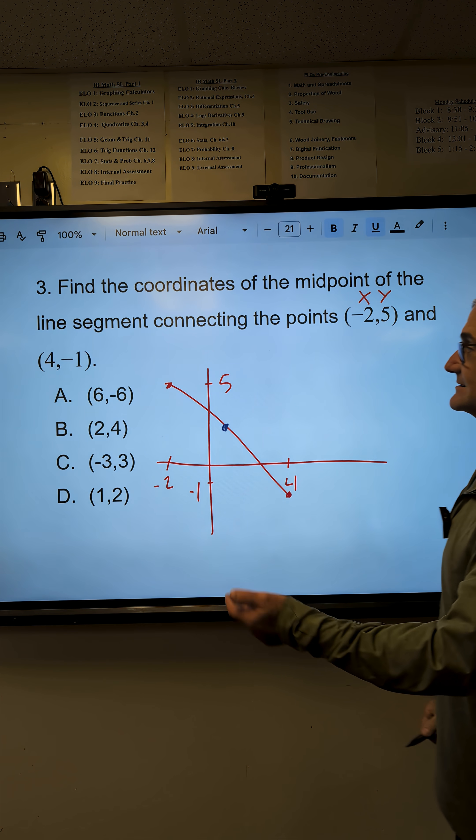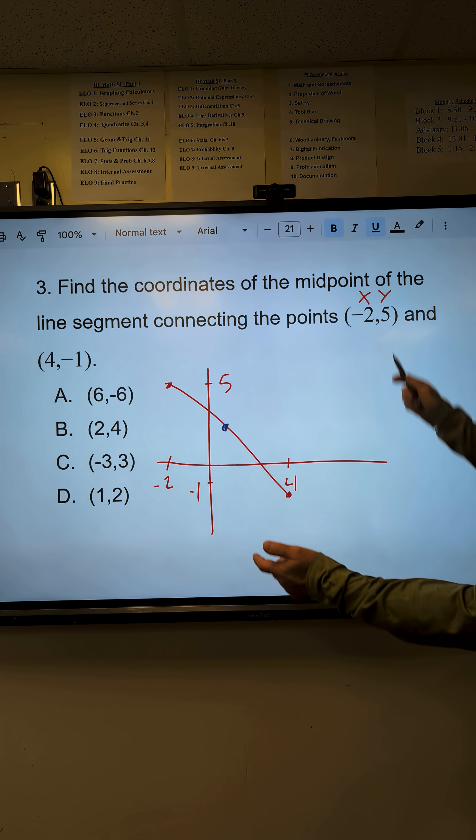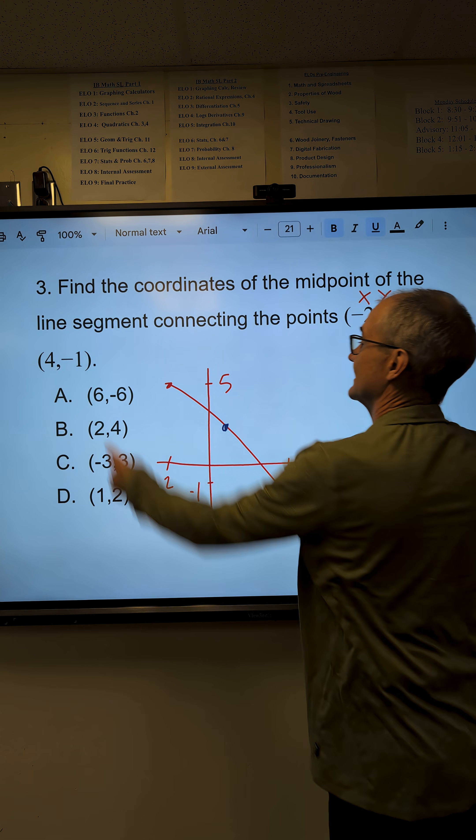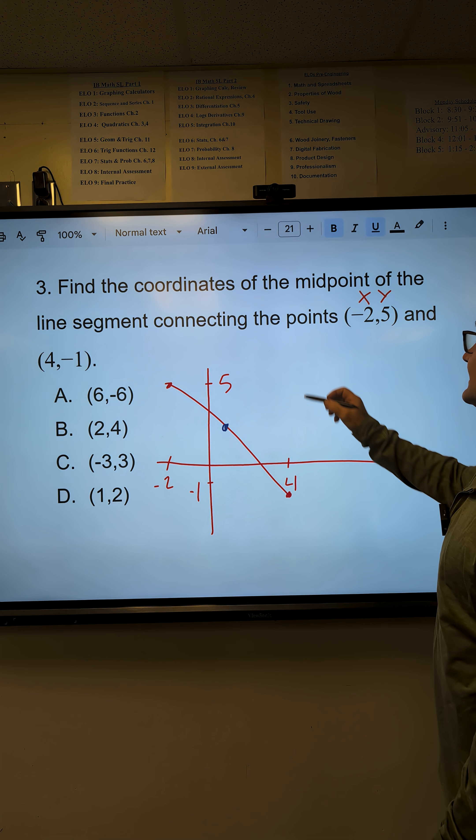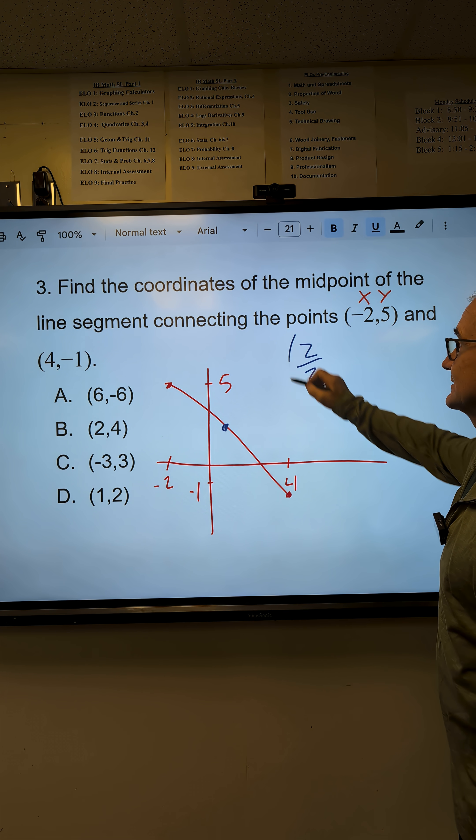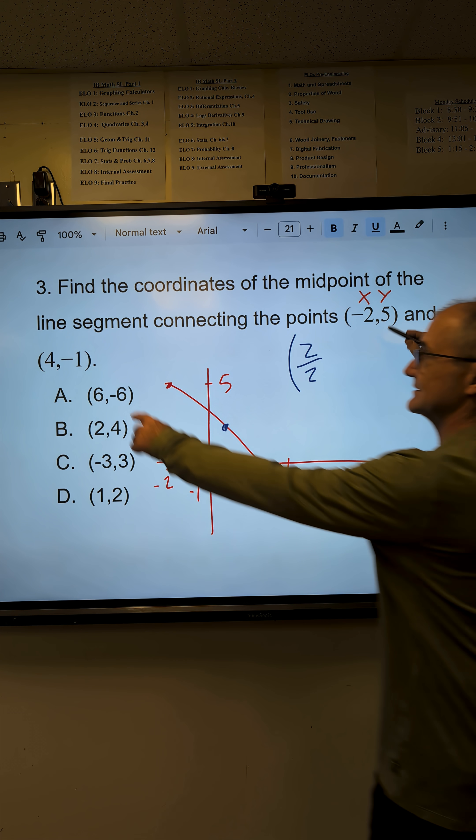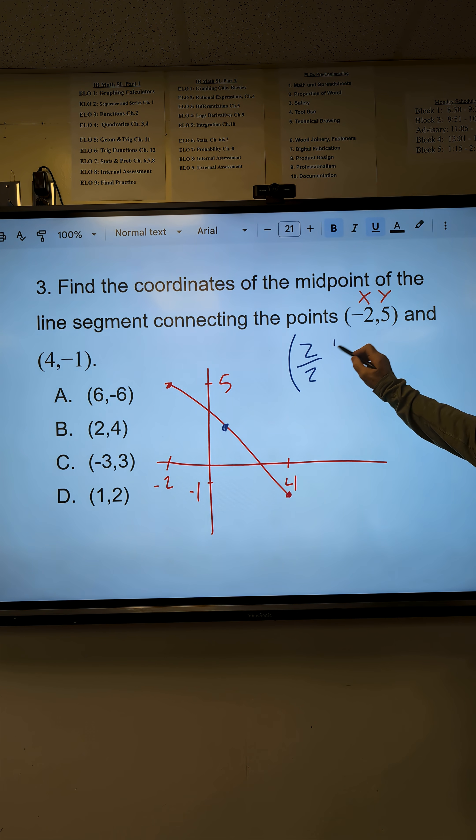The way I do that is I find the average of the x values. So negative 2 and 4 is 2 divided by 2. And then 5 and negative 1 is 4 divided by 2.